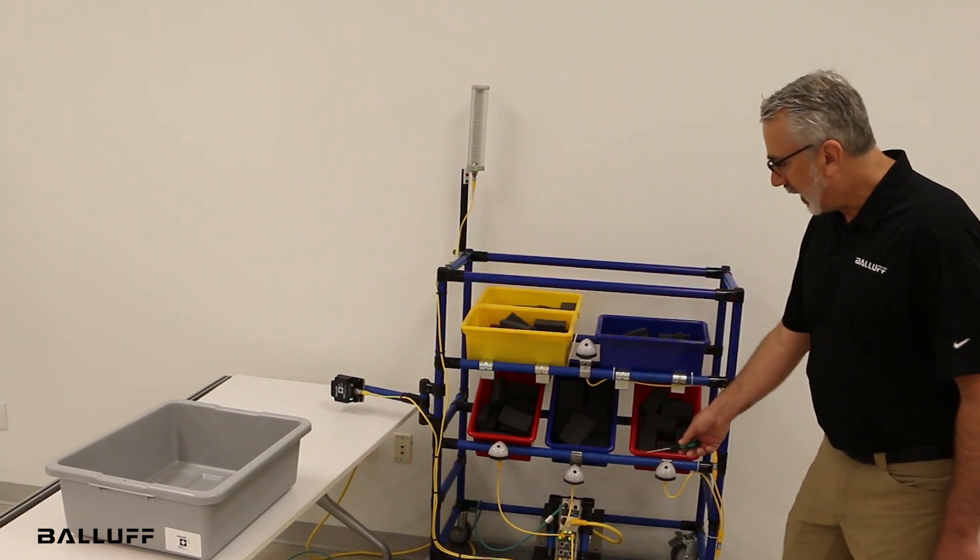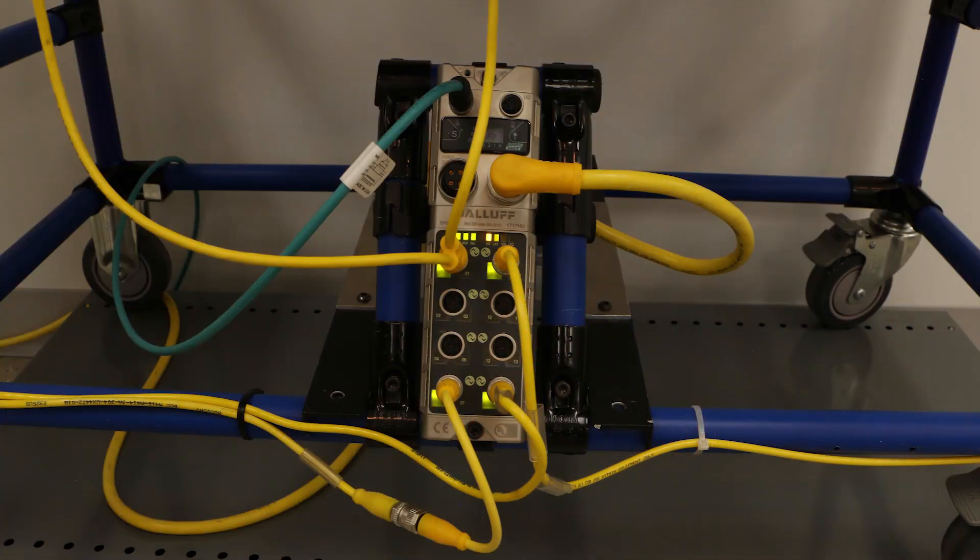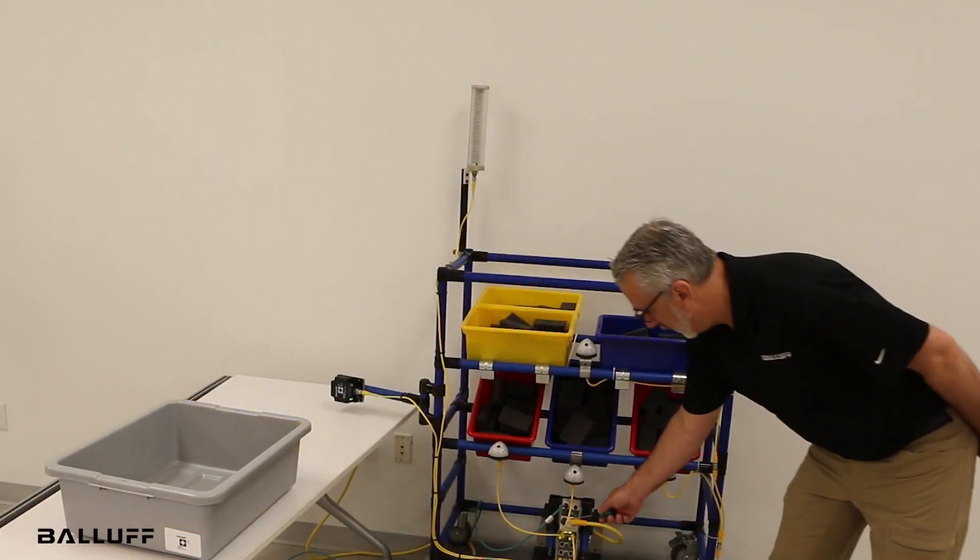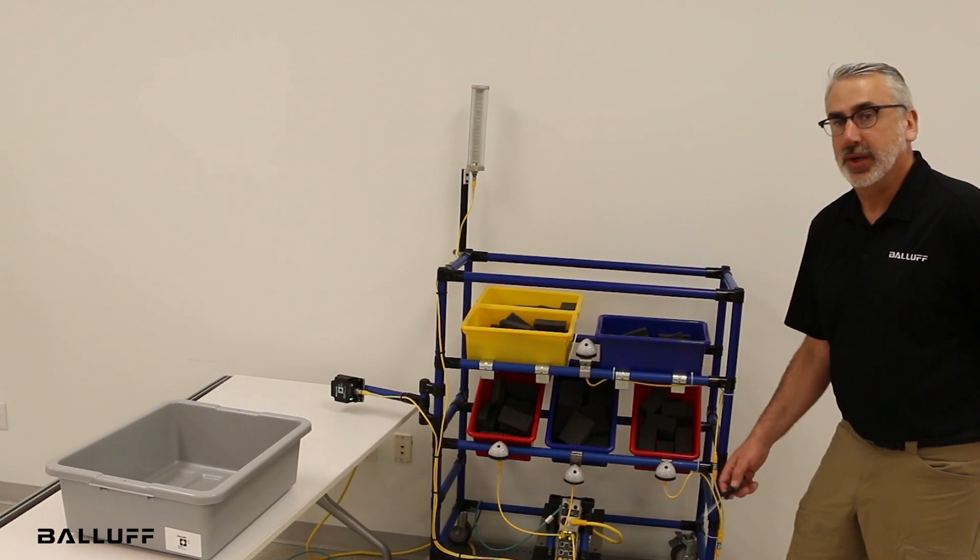Now everything here is run by our network block. This is a master port for IO-Link, of course. And you see we're only using four ports here. The interesting part is the splitter. These indicators are able to run in expansion mode.